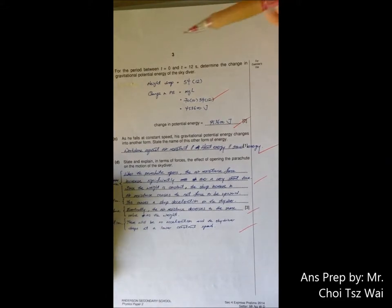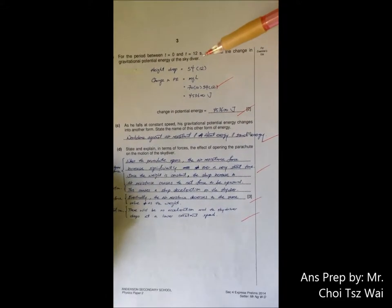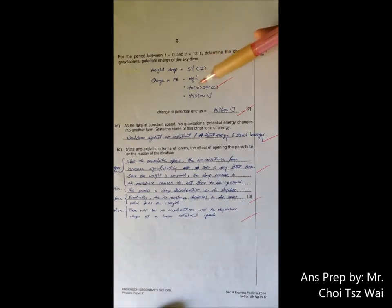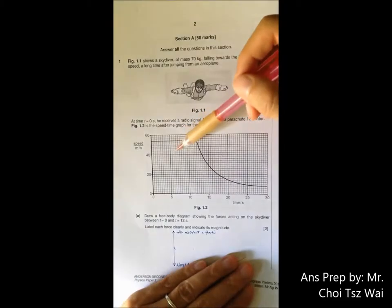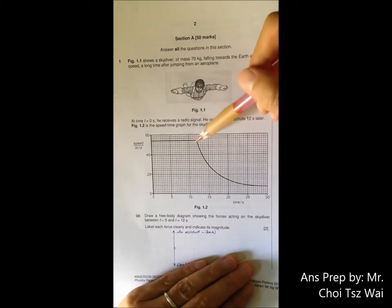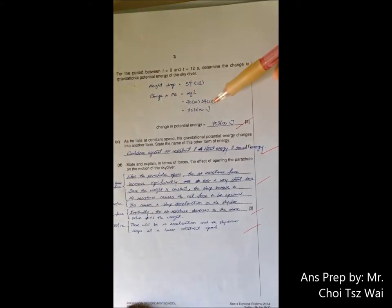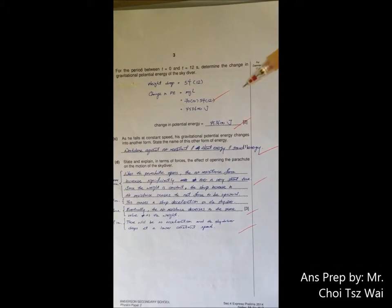Then after that, you are asked to calculate the change in gravitational potential energy. How you do it is that you have to find the change in height, and you can find that from the area underneath this line, just here. It's just a rectangle, quite straightforward. Put in the numbers, calculate it correctly, you will get the answer.